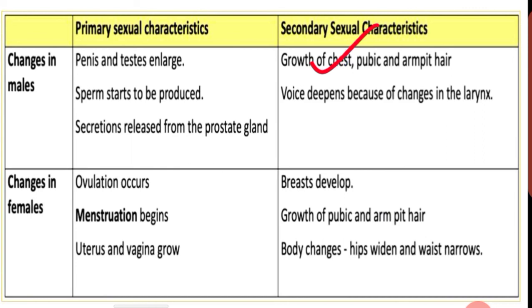The male secondary sexual characters include: growth of chest hair, pubic and armpit hair growth, and the voice deepens because of changes in the larynx. At the time of puberty, voice changes occur in males.